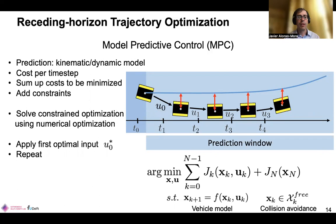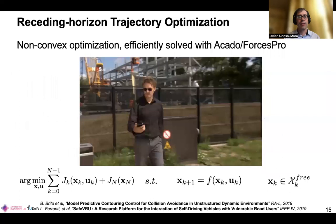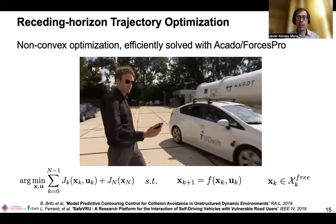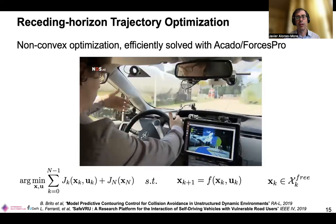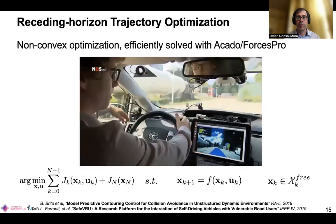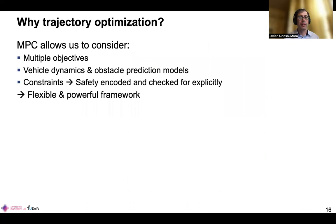We minimize this cost function subject to the vehicle model constraints and the collision avoidance constraints using numerical optimization. We then apply the first optimal input to our system and keep repeating this many times per second. This MPC framework works very well — you can use existing solvers like Acado or Forces Pro. What you see in this video is our self-driving car on the left avoiding a car that was not paying attention. It works quite well. It's a very flexible and powerful framework: you can encode multiple objectives in the cost function, vehicle dynamics, obstacle prediction models, and explicit constraints for safety warranties.